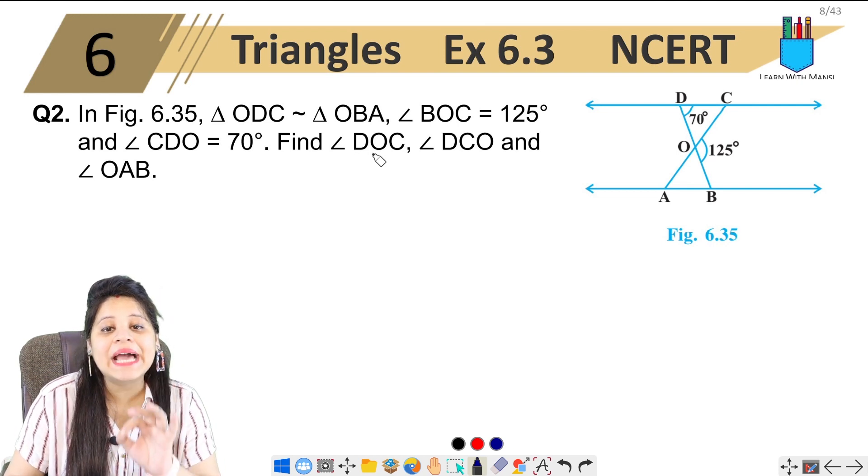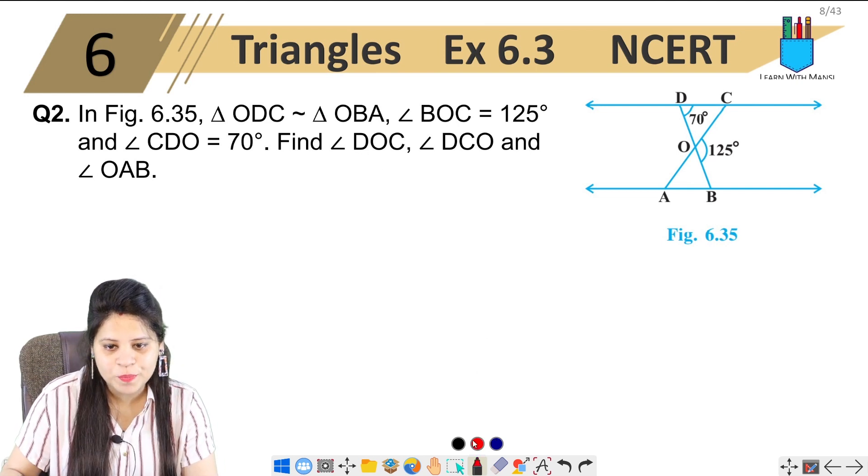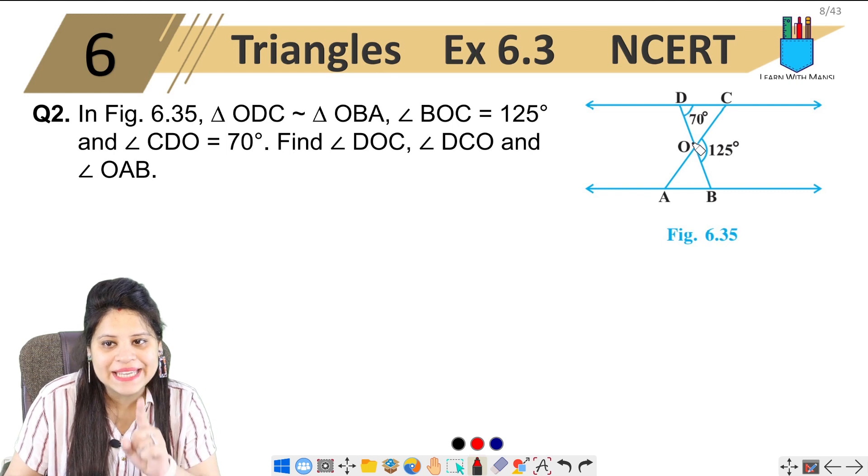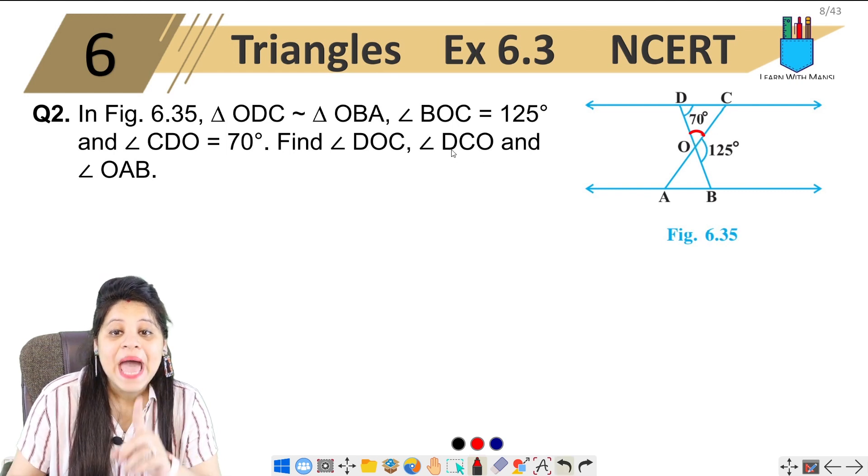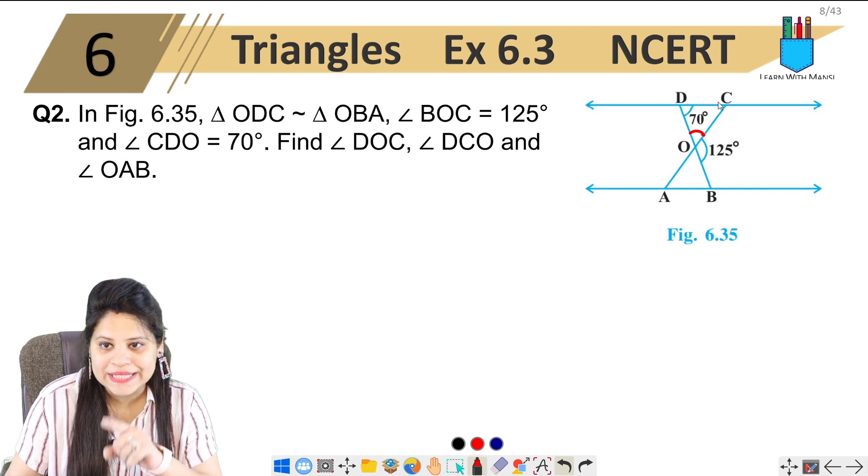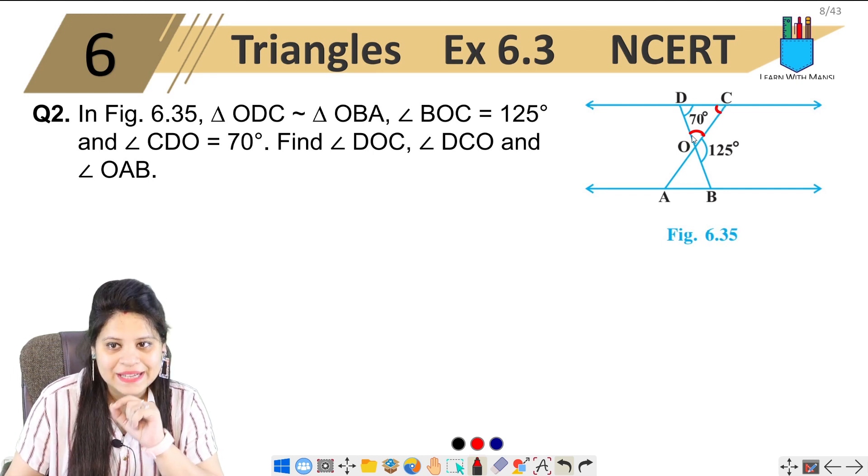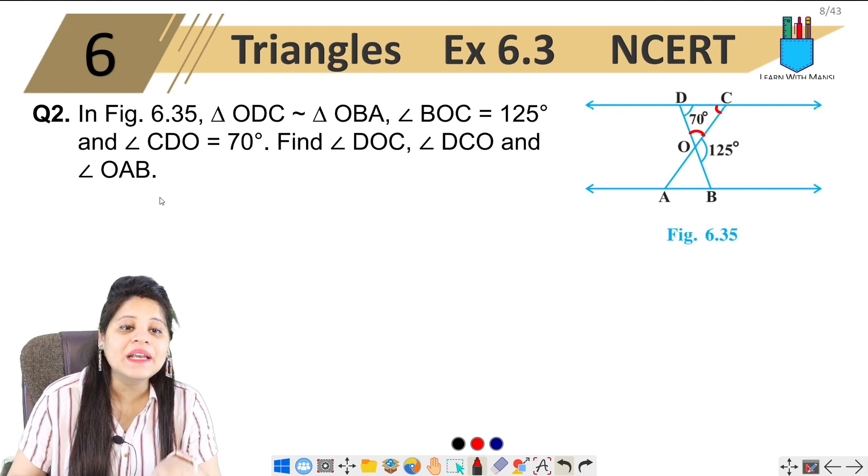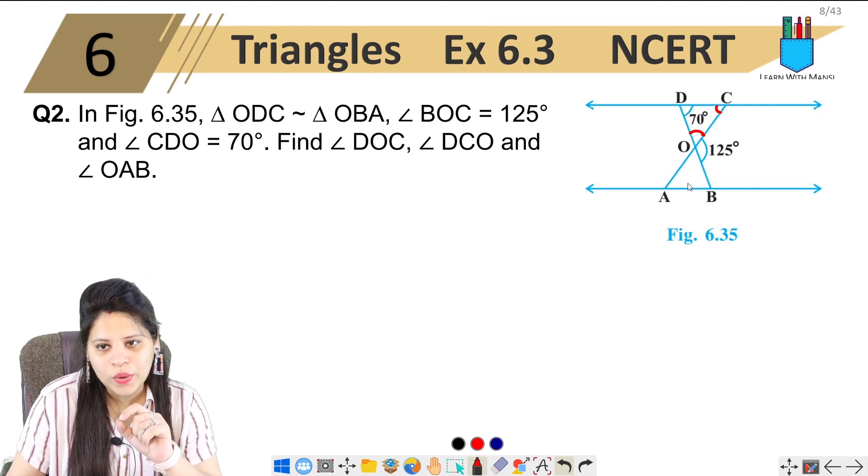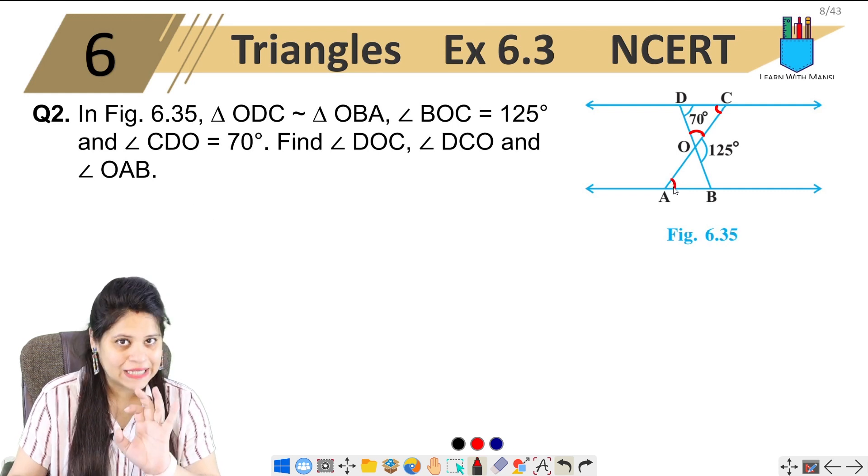Find angle DOC, angle DCO, and angle OAB. So what do we mark first? DOC means this angle, DCO means this angle, and OAB means this angle. Okay, let's start with this angle.